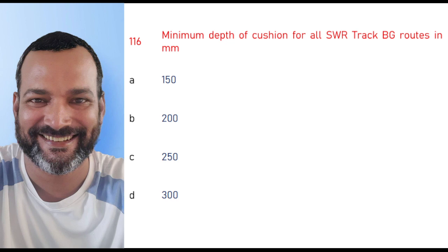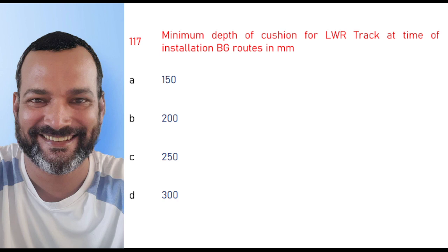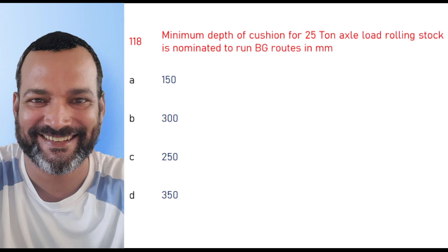Minimum depth of cushion for all SWR track BG routes in main line is 250 mm. Minimum depth of cushion for LWR track at the time of installation is 250 mm. Minimum depth of cushion for 25-ton axle load rolling stock nominated to run on BG routes in main line is 350 mm.